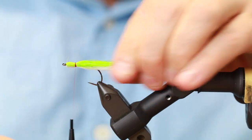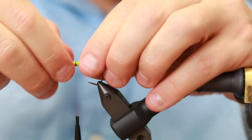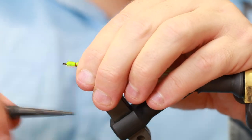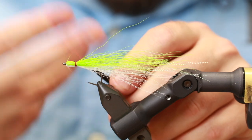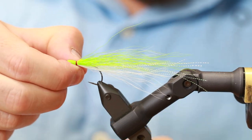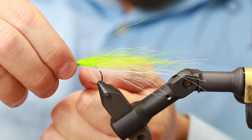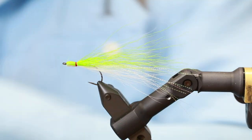And then tie it down. Now all you need to do is make a whip finish, and the red thread here is going to look a lot like the gills of the fish, so it has a function. There you go.